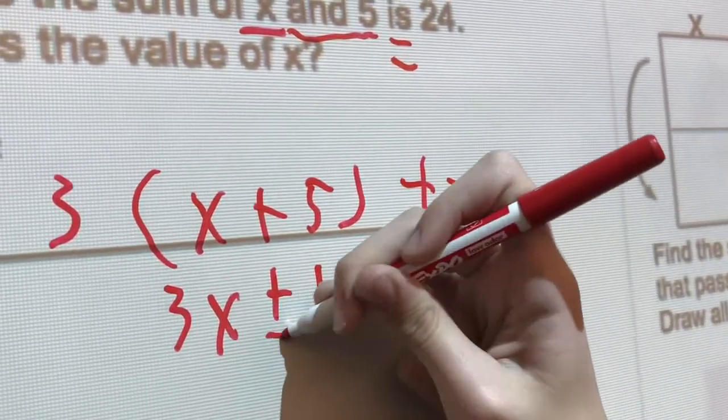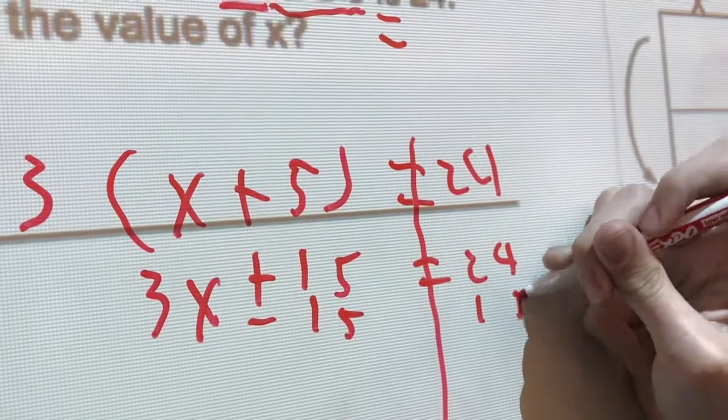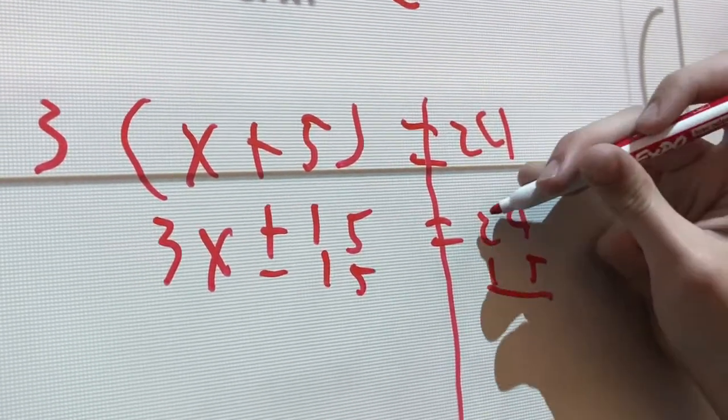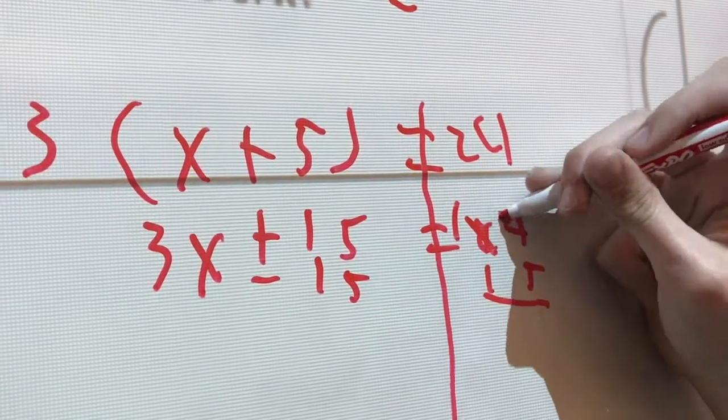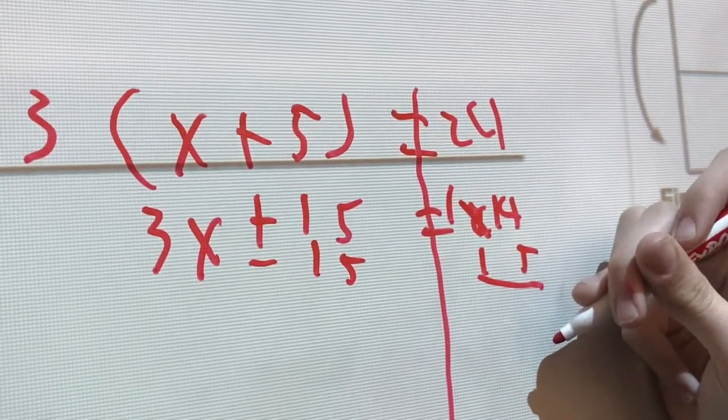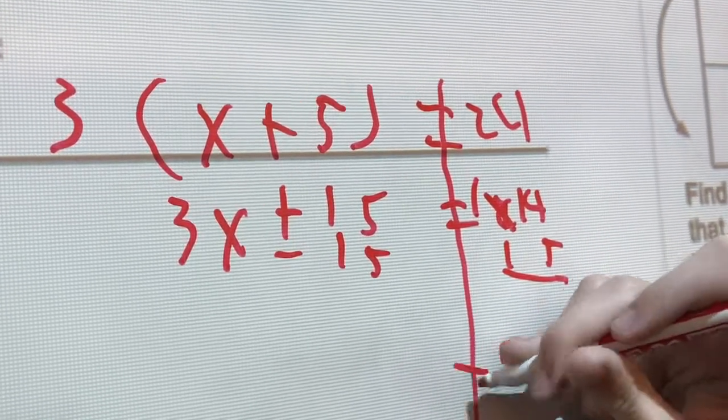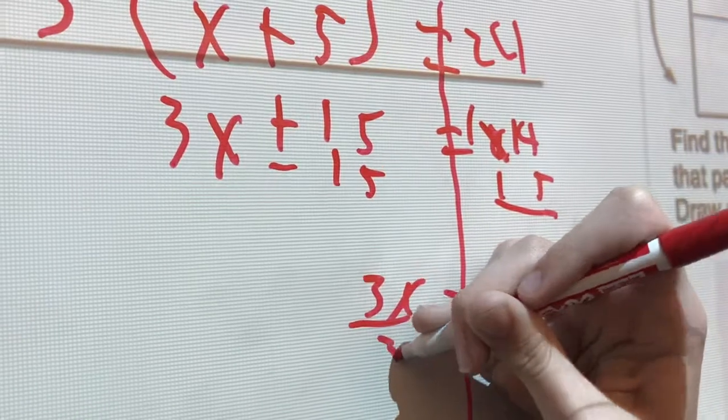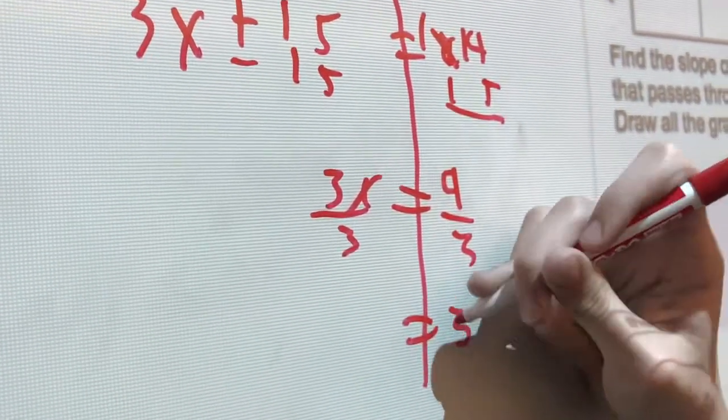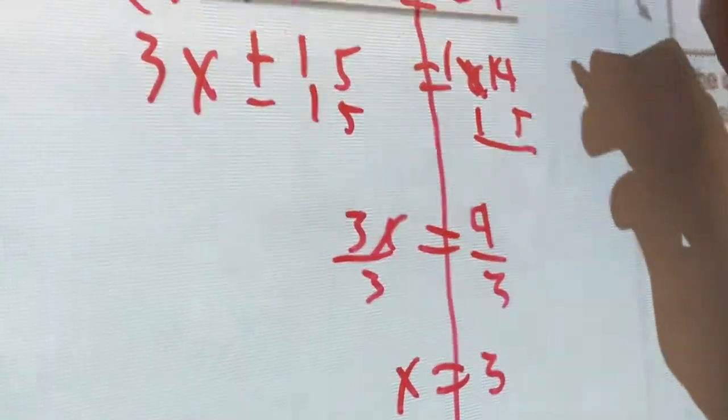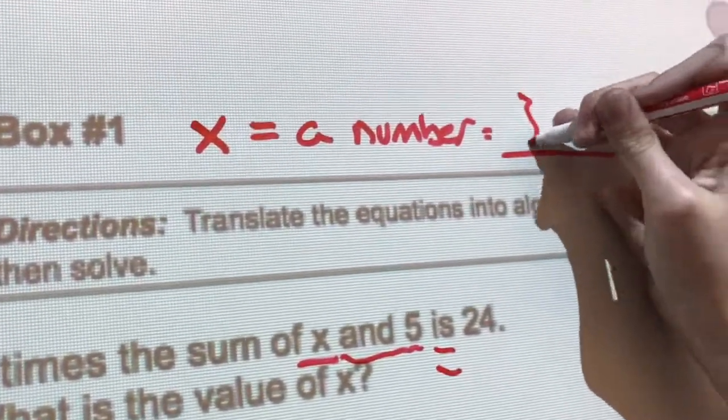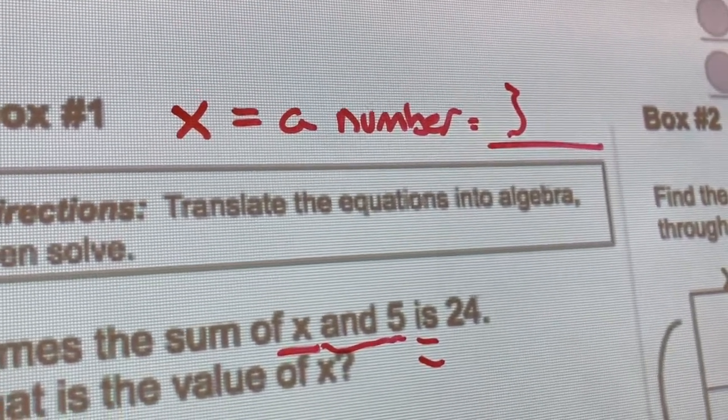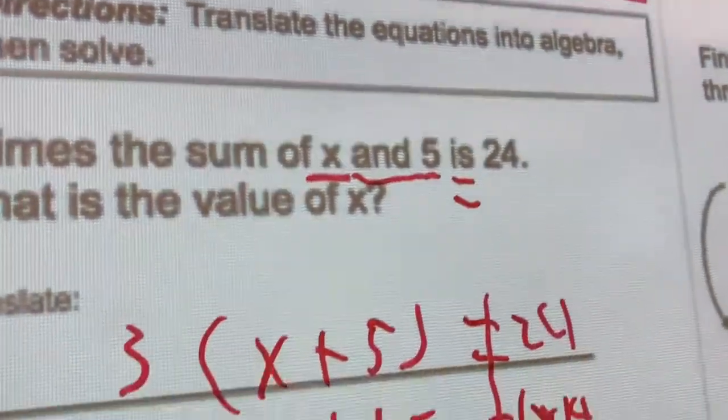And now you minus 15, which will give you 9. 9 equals 3x. Divide 9 by 3. And that gives you x equals 3. Okay, now let's get credit for the problem, right? And don't forget to put x equals a number equals 3. Okay, so you're going to get all your points. Did you do everything you need to do? Yes. I think you did. Nice job.